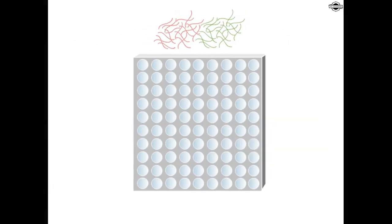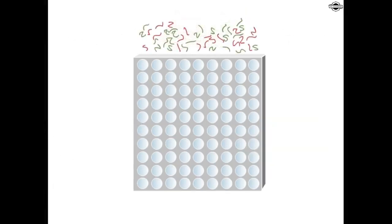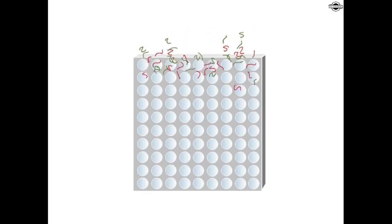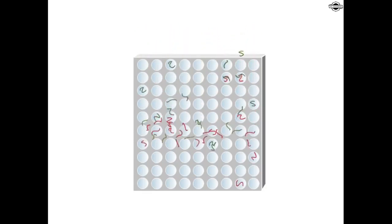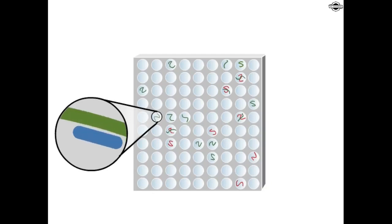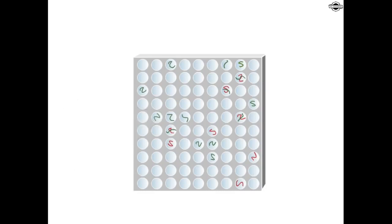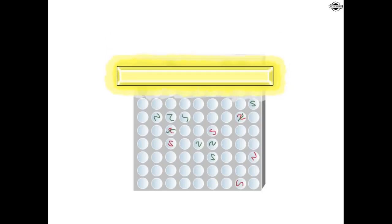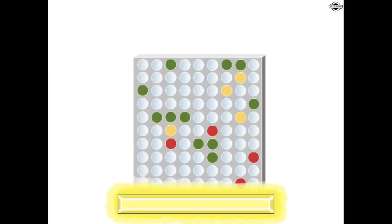The cDNA samples are mixed together and added to the microarray. cDNAs that are complementary to oligonucleotides on the microarray will bind, or hybridize, with the DNA, and thereby stick to that location on the slide. Unbound cDNAs are washed away, and a scanner detects patterns of hybridization by sensing the fluorescent signals.